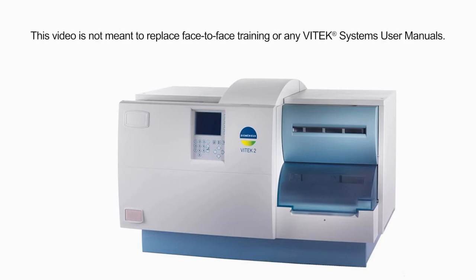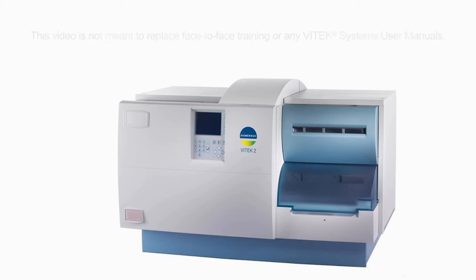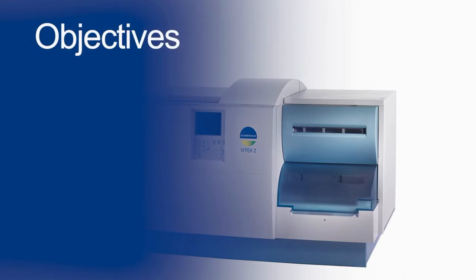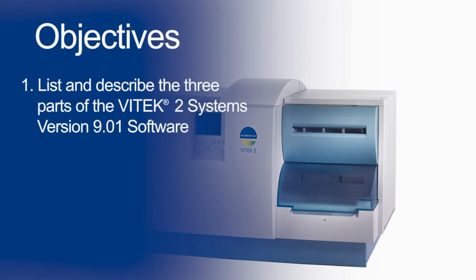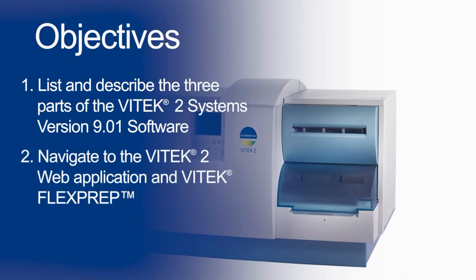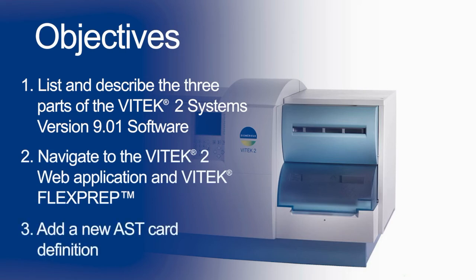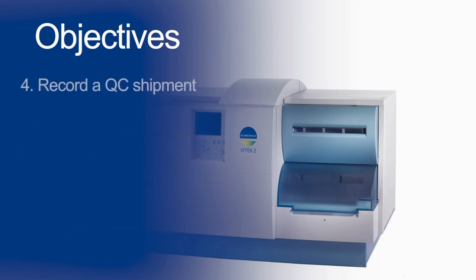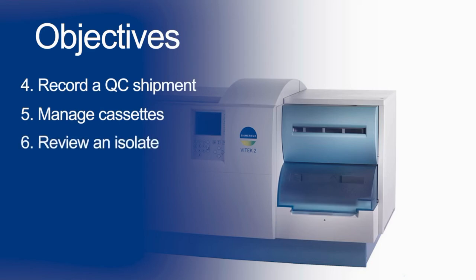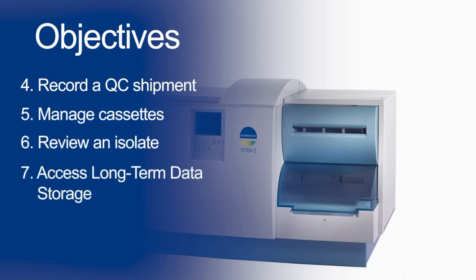This video is not meant to replace face-to-face training or any Vitec Systems user manuals. By the end of this video, you will be able to list and describe the three parts of the Vitec 2 Systems Version 9.01 software, navigate to the Vitec 2 Web Application and Vitec FlexPrep, add a new AST card definition, record a QC shipment, manage cassettes, review and isolate, and access long-term data storage.